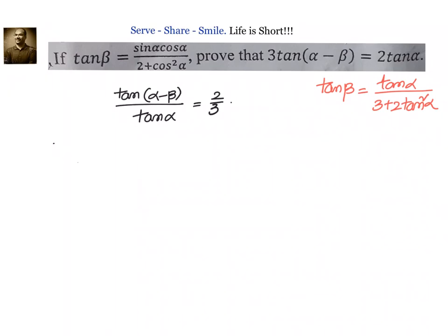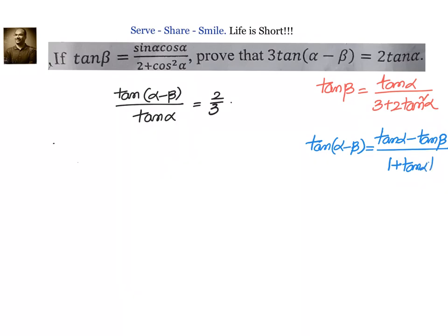Now, what is the formula for tan α minus β? Let us write that down. tan of α minus β equals tan α minus tan β divided by 1 plus tan α into tan β. That is the formula we have. So wherever we see tan β, we will write down tan α divided by 3 plus 2 tan squared α.